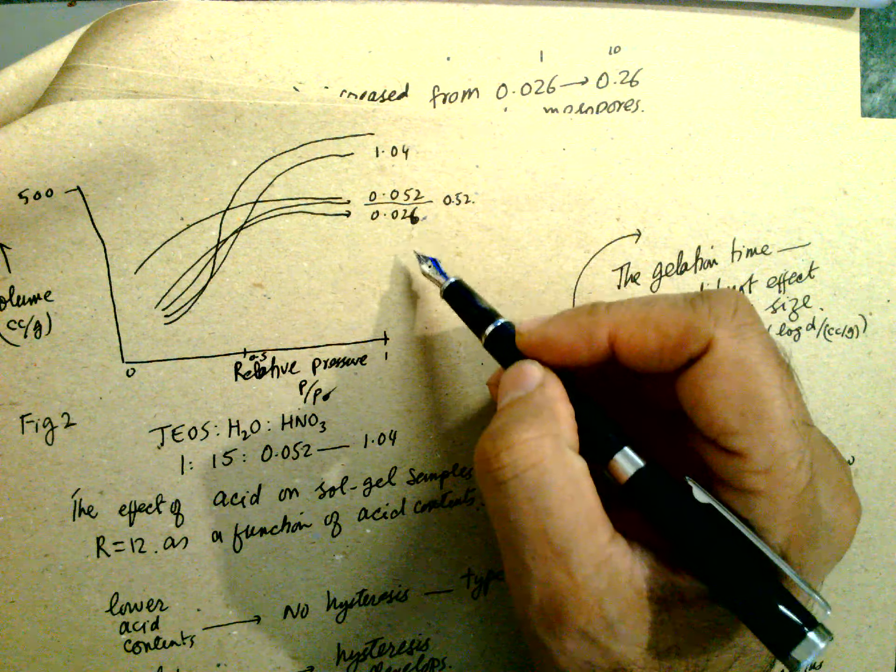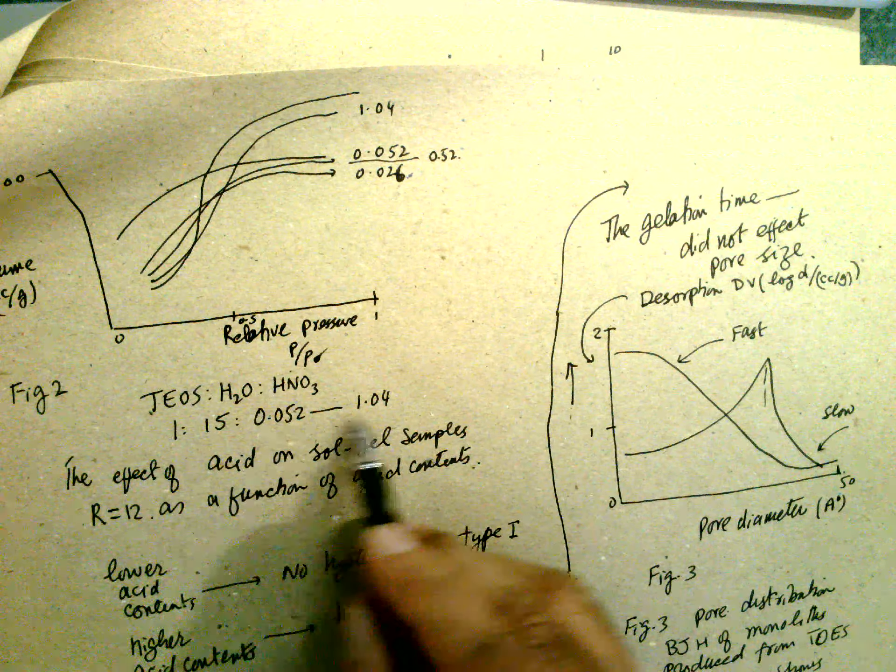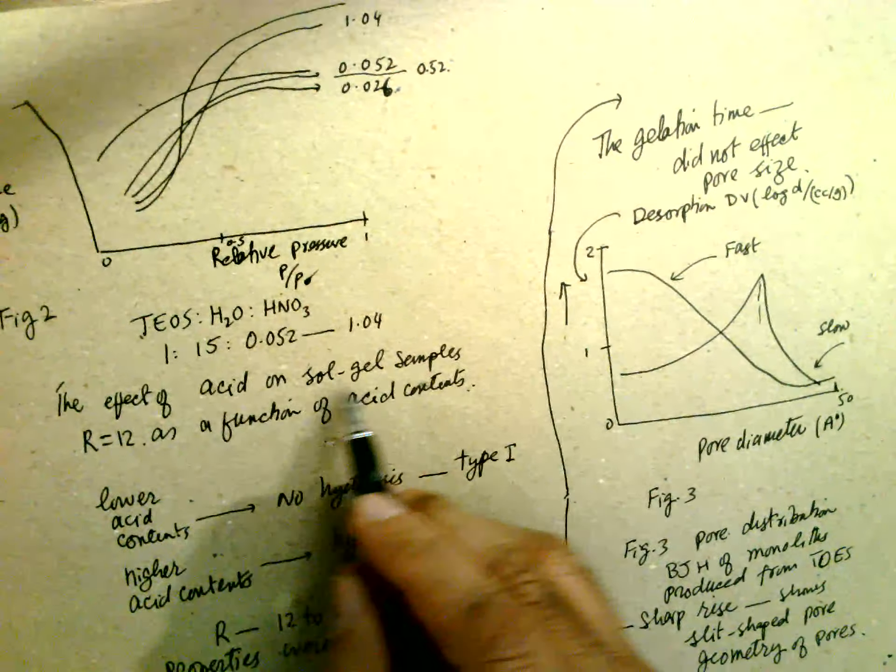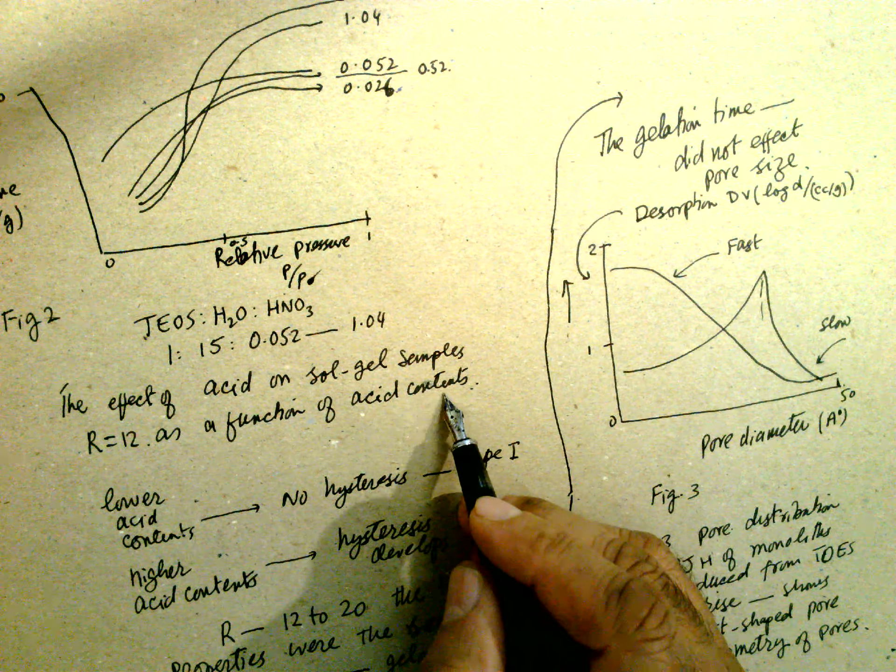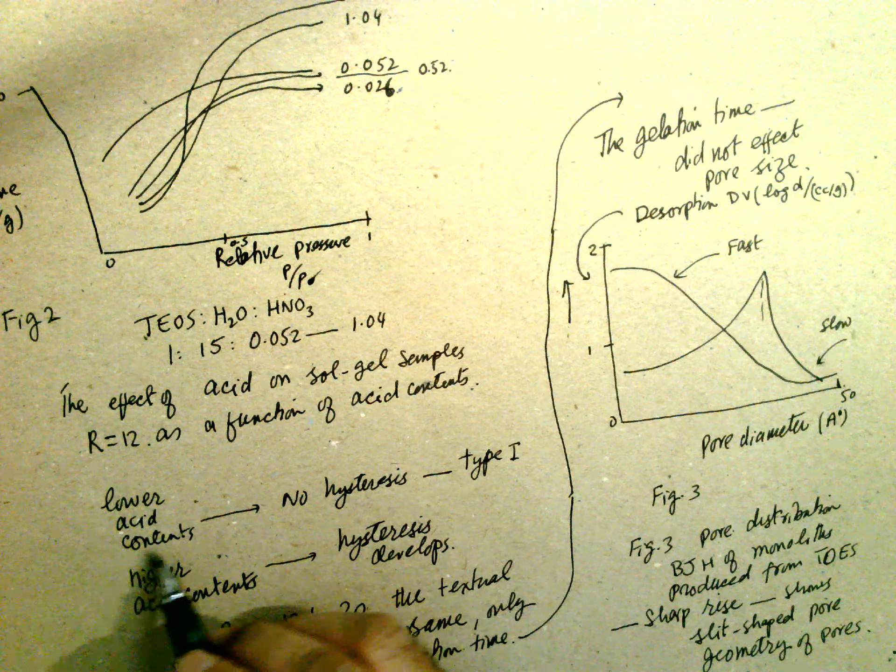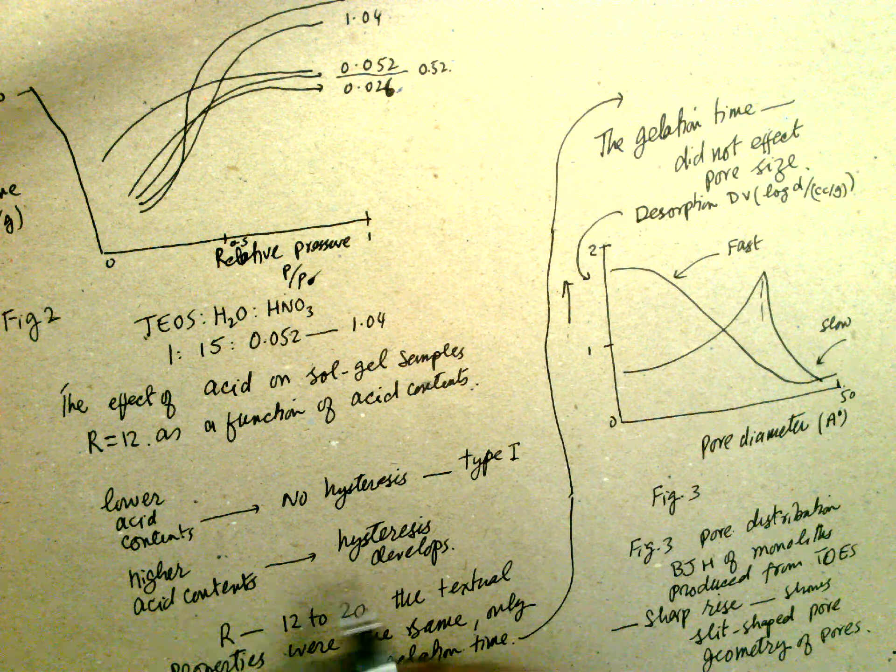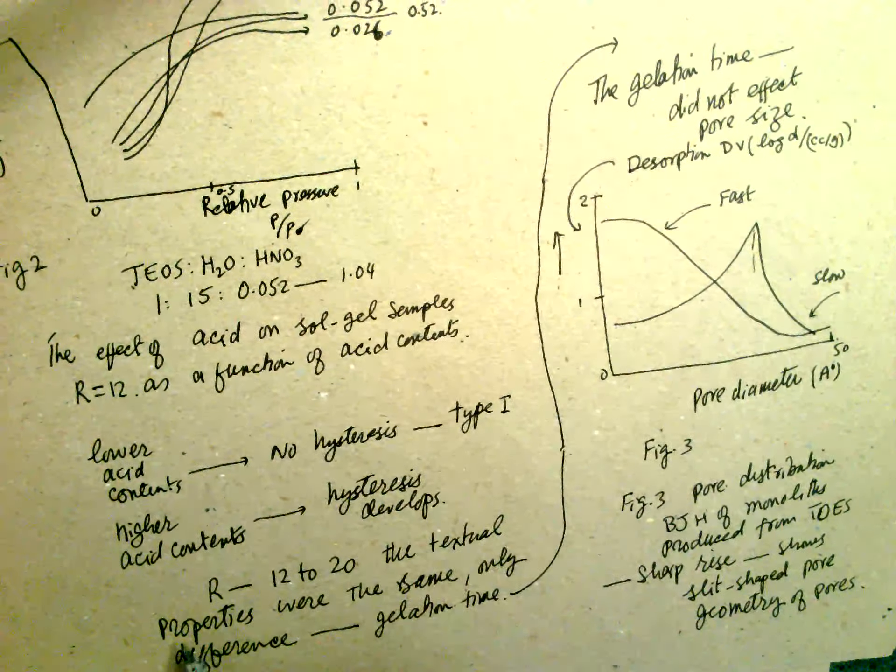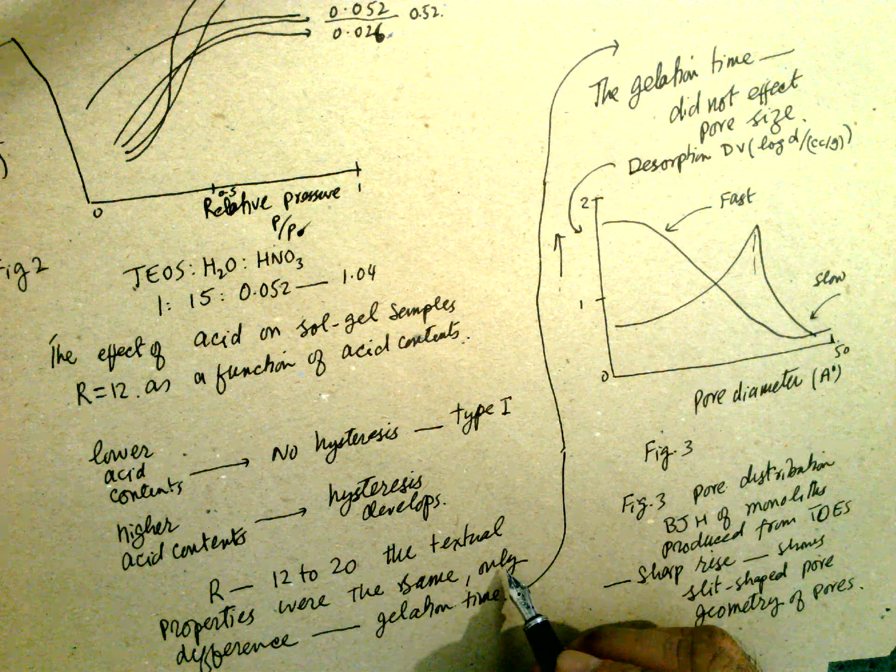Relative pressure, this one is different acids. TEOS, this is the concentration, effect of acid on sol-gel samples R12 as a function of acid content. This one, lower acid, no hysteresis. Higher acid concentration, hysteresis is there.